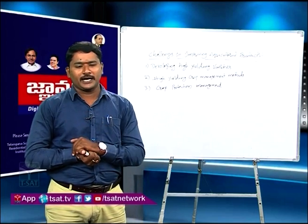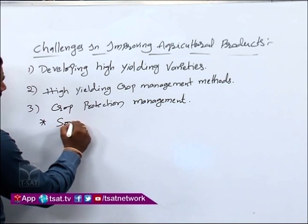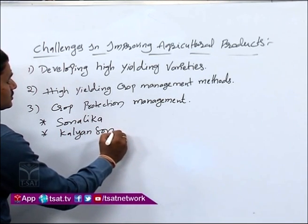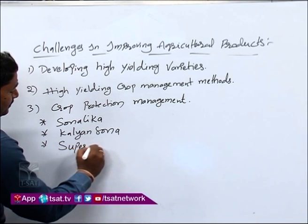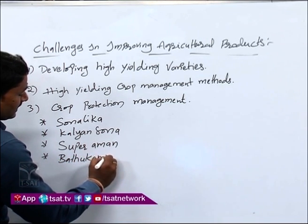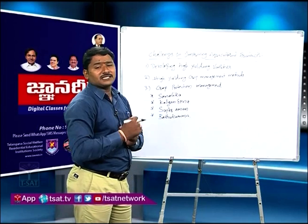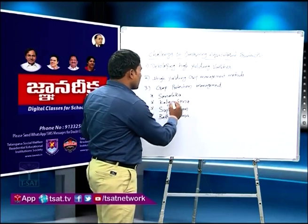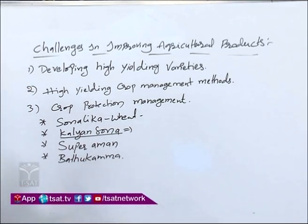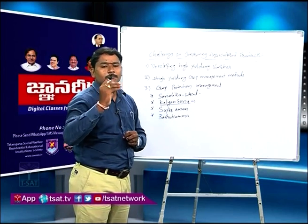Some high yielding varieties used in India include Sonalika, a wheat variety; Kalyan Sona, an important paddy variety used in Telangana; and Super Aman. Kalyan Sona is helpful to diabetes patients because of its low glucose levels. Especially in Telangana, we are also using Batkamma seeds.